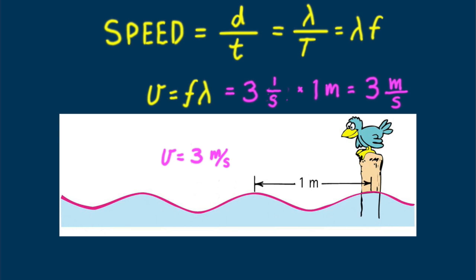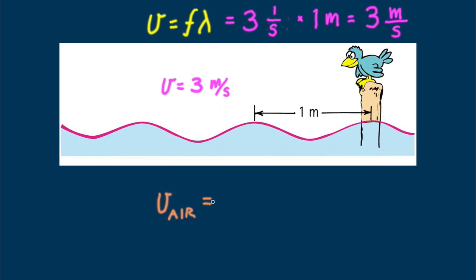Let me leave you with a question. Given that the speed of sound in air is 340 meters per second, and sound frequency is 34 hertz, what is the wavelength of this sound?